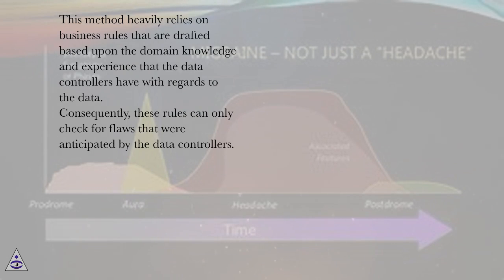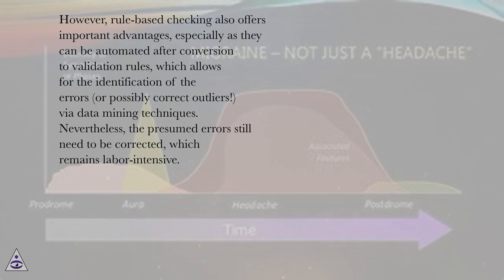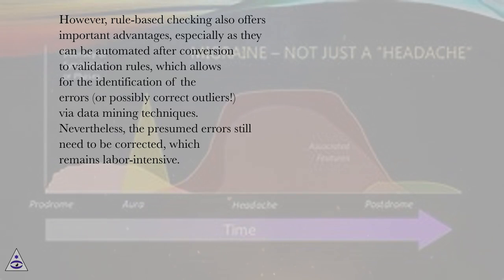Consequently, these rules can only check for flaws that were anticipated by the data controllers. However, rule-based checking also offers important advantages, especially as they can be automated after conversion to validation rules, which allows for the identification of errors, or possibly correct outliers, via data mining techniques. Nevertheless, the presumed errors still need to be corrected, which remains labor-intensive.